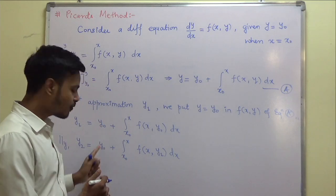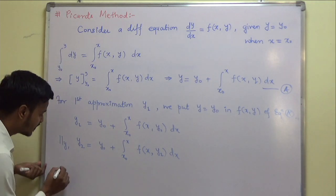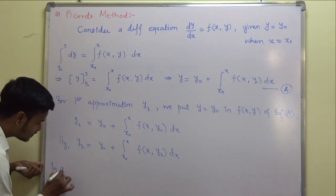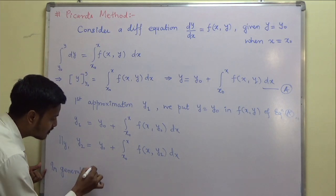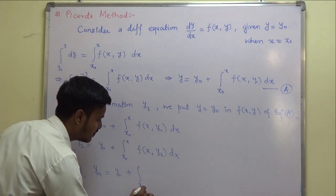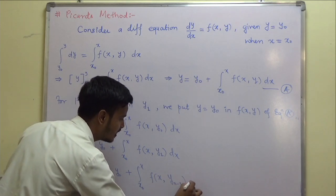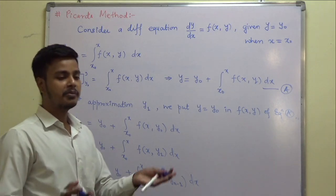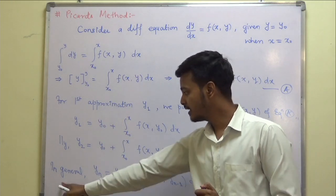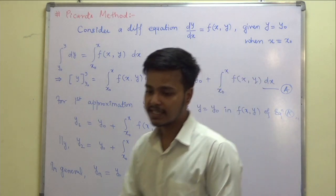I hope you found y_n. In general, y_n = y₀ + ∫[x₀ to x] f(x, y_{n−1}) dx. This is the general formula. From everything we have done, you just need to remember this one general formula, because with its help you can get all the approximations. Now let us take an example.